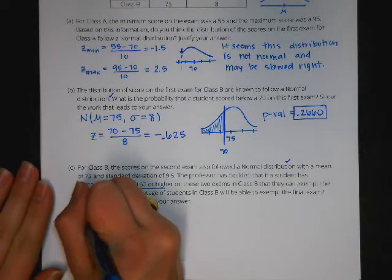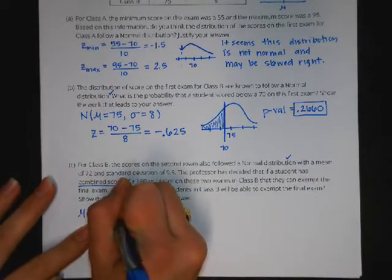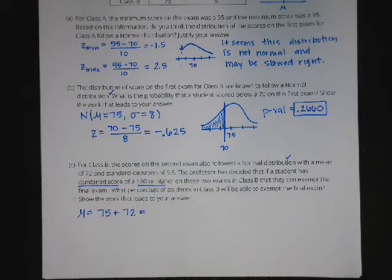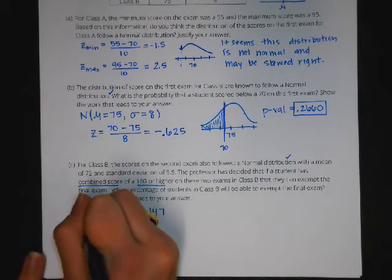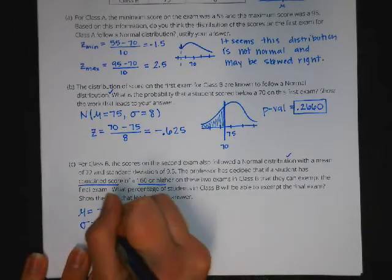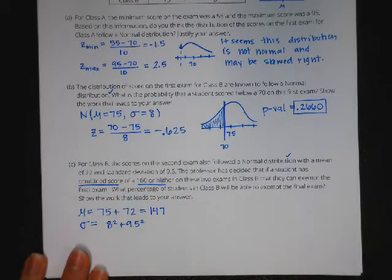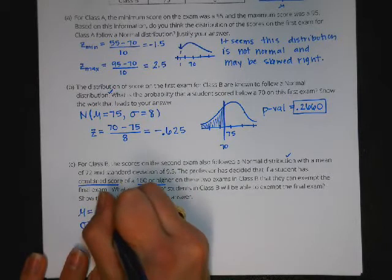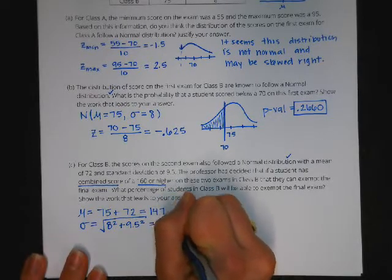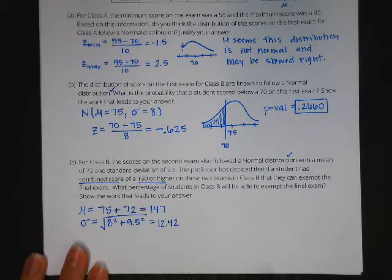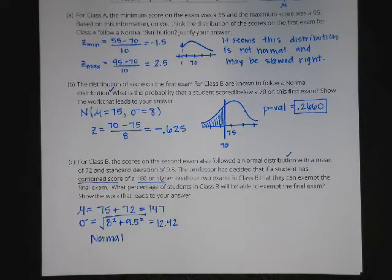I need to find the distribution for the combined scores. I'm going to take the mean from the first exam and add the mean from the second exam to combine those scores, which gives me 147. My standard deviation is going to be the addition of the variance from exam 1 and exam 2. Then you'll take the square root to get the standard deviation, which is 12.42. Since I'm combining two normal distributions, the result is also a normal distribution.